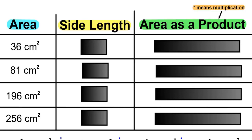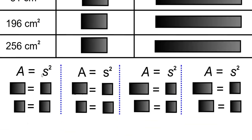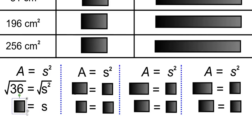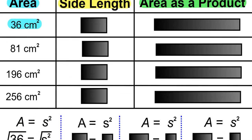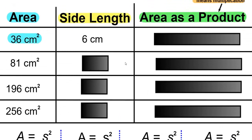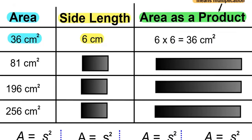In the first example, the area is going to be 36 centimeters squared. The formula for area is area equals side squared. Area is 36, and that equals side squared. To find one side, we take the square root of side squared, therefore taking the square root of 36. The squared and square root cancel, giving us the side, and the square root of 36 is 6. So the side equals 6 centimeters. And the area as a product will be 6 times 6 equals 36 centimeters squared.